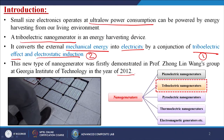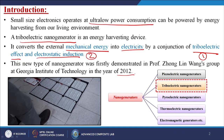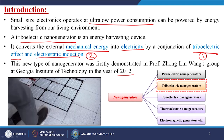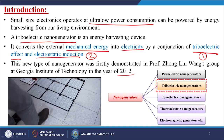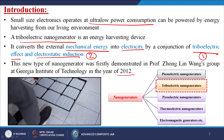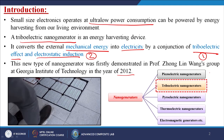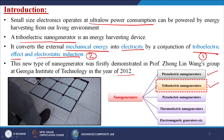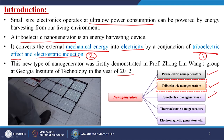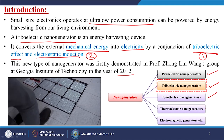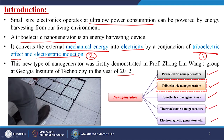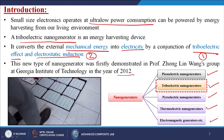He invented the technology in the year 2012. There are several types of nanogenerators based on their applications: one is called the piezoelectric nanogenerator, then triboelectric nanogenerators, pyroelectric nanogenerators, thermoelectric nanogenerators, and electromagnetic generators. Today we are going to discuss about the triboelectric nanogenerators.